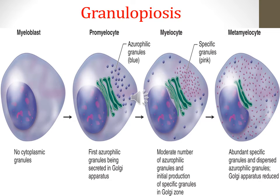This figure shows stages of granulopoiesis, or synthesis of granular leukocytes. The first stage is called myeloblast, then promyelocytes, followed by myelocytes and metamyelocytes.